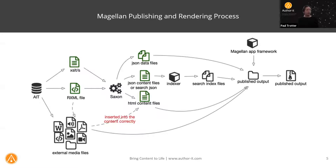The publishing process starts in your AuthorIt database, which exports a resolved XML file of the book you've chosen to publish with your filters and variance settings. An XSLT processes that XML file, resulting in a series of JSON files — which provide structured data to JavaScript — and HTML content files. We add media and other resources, combine everything, create index files, and deliver that to an output folder, which is then combined with the Magellan application. The content and the Magellan application are quite separate; we continue to develop the application while your content is simply combined with it.